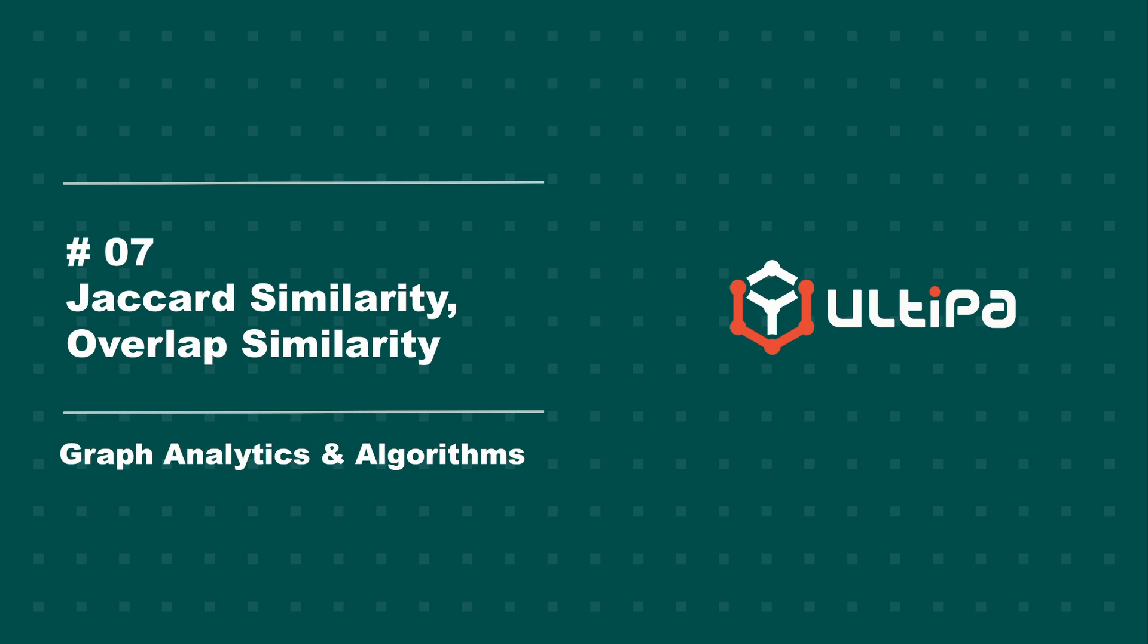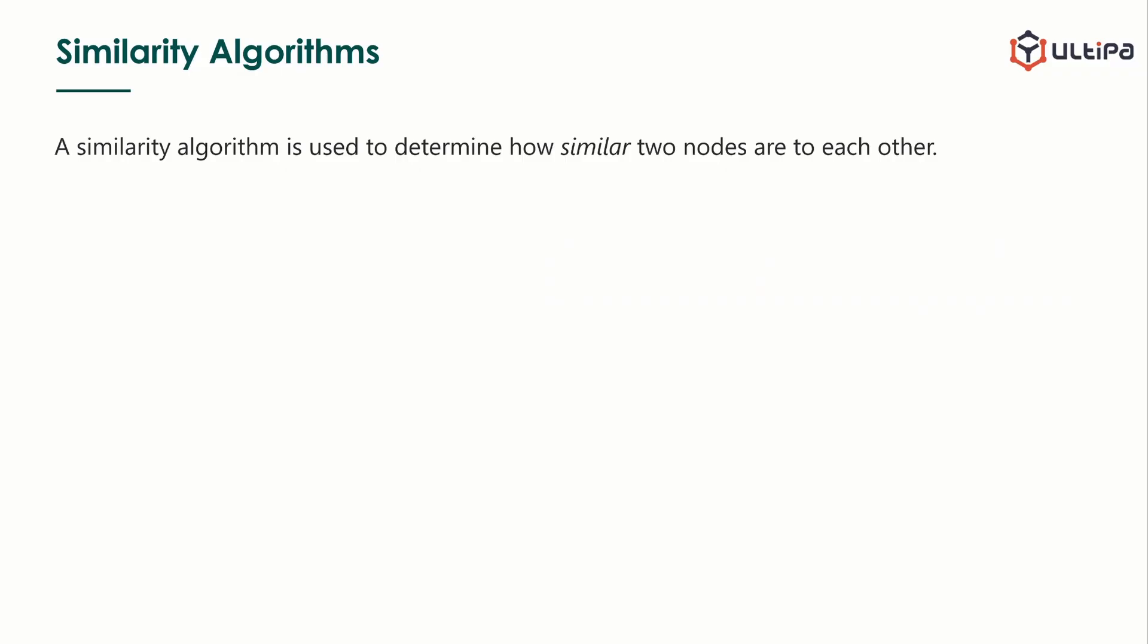Welcome to Altypa's graph analytics and algorithm series. In this and the next video, we are going to learn about similarity algorithms. A similarity algorithm is used to determine how similar two nodes are to each other.